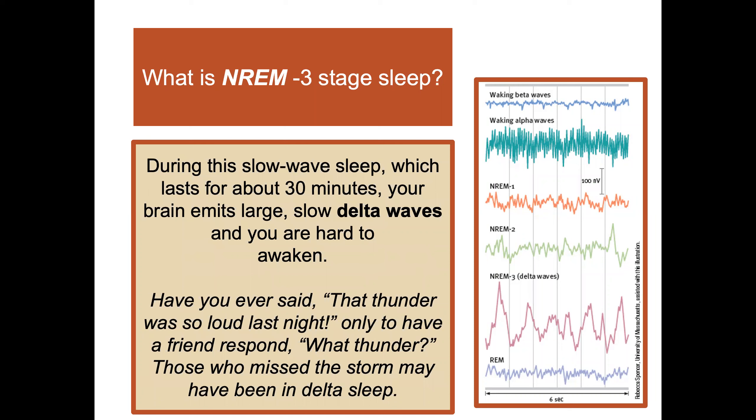Now NREM stage 3: during this slow wave sleep, which lasts for about 30 minutes, your brain emits large, slow delta waves. You can see those on the image — the taller ones with higher peaks. You are hard to awaken if you are in deep delta wave sleep. Have you ever heard thunder during the night that a family member completely missed? Those who missed the storm may have been in their delta sleep.